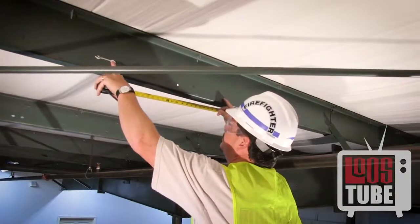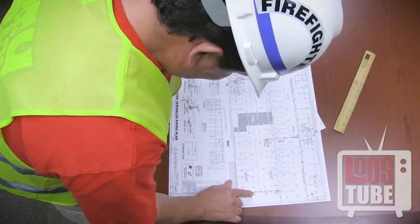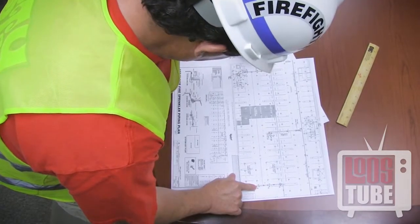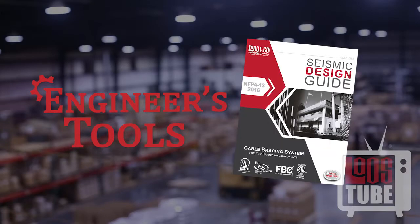Welcome back to Loosetube. This video will demonstrate how to install a longitudinal sleeve brace at a coupling or clamp. As with any brace, begin by securing the cable to the structure in the manner specified by your completed drawings. Refer to your design's specifications from the engineer's tools calculator or to your design manual.